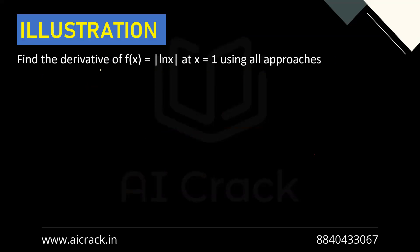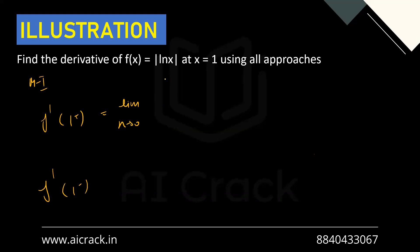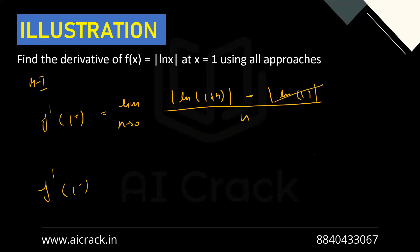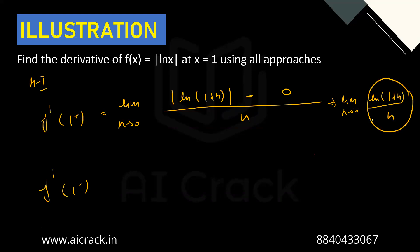Let's solve: find the derivative of f(x) = |ln x| at x = 1 using all approaches. Method one is the first principle. We calculate f'(1+) = limit h→0 of [|ln(1+h)| − |ln 1|] / h. Since ln 1 = 0, and 1+h is positive so ln(1+h) is positive, the modulus opens up. This gives limit h→0 of ln(1+h)/h, which is the standard limit equal to 1. So f'(1+) = 1.